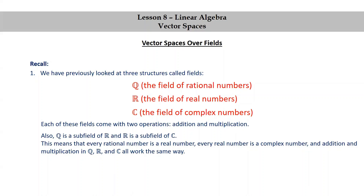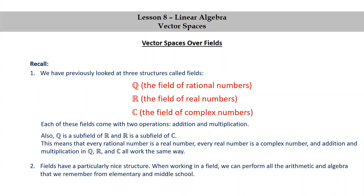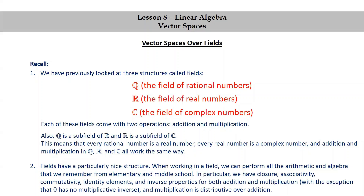This means that every rational number is a real number, every real number is a complex number, and addition and multiplication in Q, R, and C all work the same way. Fields have a particularly nice structure. When working in a field, we can perform all the arithmetic and algebra that we remember from elementary and middle school. In particular, we have closure, associativity, commutativity, identity elements, and inverse properties for both addition and multiplication — with the exception, of course, that zero has no multiplicative inverse. Also, multiplication is distributive over addition.